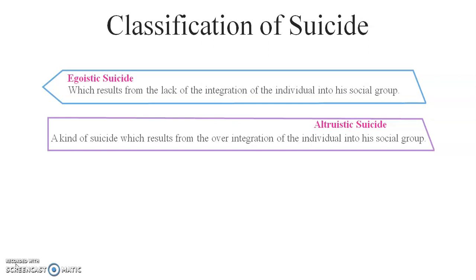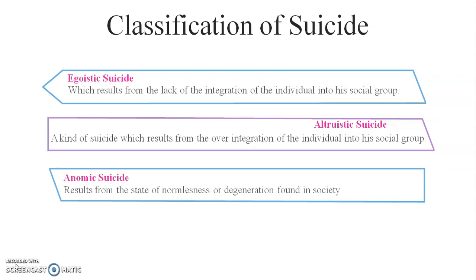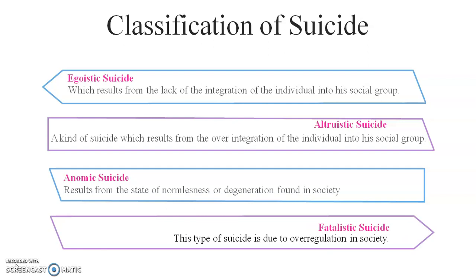The third type is anomic suicide, which results from a state of normlessness or moral deregulation in society. It takes place in situations that happen suddenly, for example, financial loss, natural disasters, or the death of a charismatic person. The fourth type is fatalistic suicide, which is due to over-regulation in society — for example, prisoners, slaves, or servants who commit suicide due to excessive regulation.